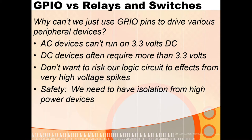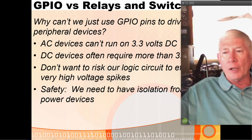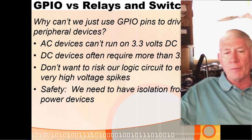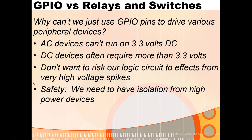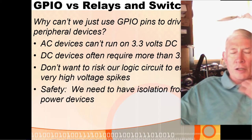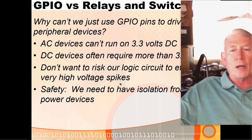We can't just use GPIO pins because many devices are AC, and our board runs on 3.3V or 5V DC — you certainly can't power an AC device on 3.3V DC. A lot of DC devices take more than 3.3 or 5 volts. We also want isolation from our logic circuits to the high-voltage circuits — we don't want our logic circuits getting zapped by voltage spikes from a motor, and for safety, low-power touch switches should be kept away from high voltages.